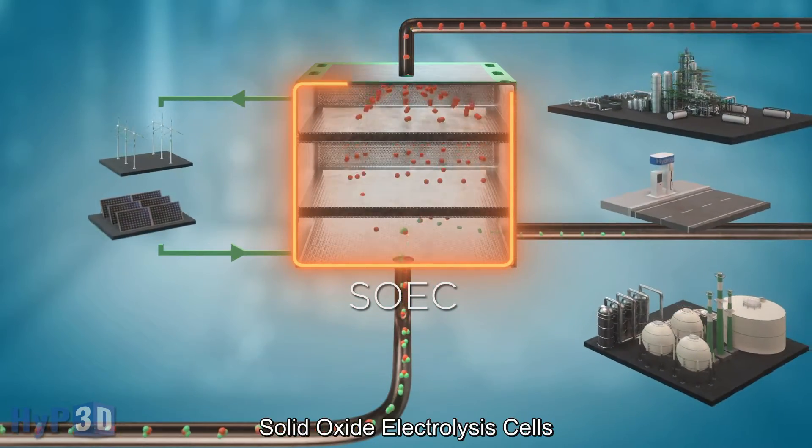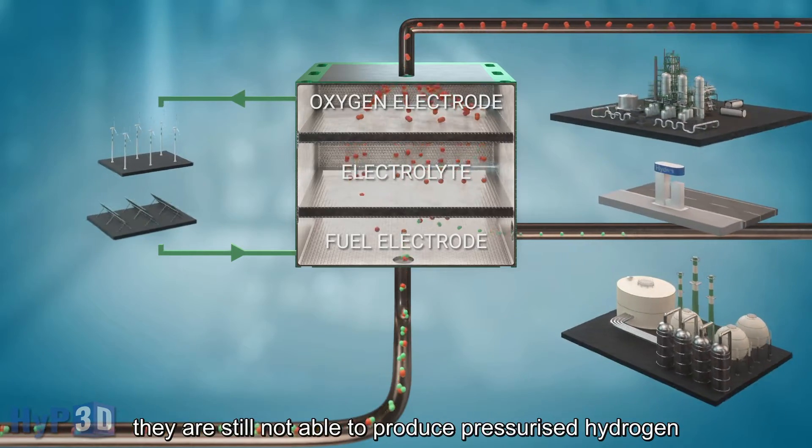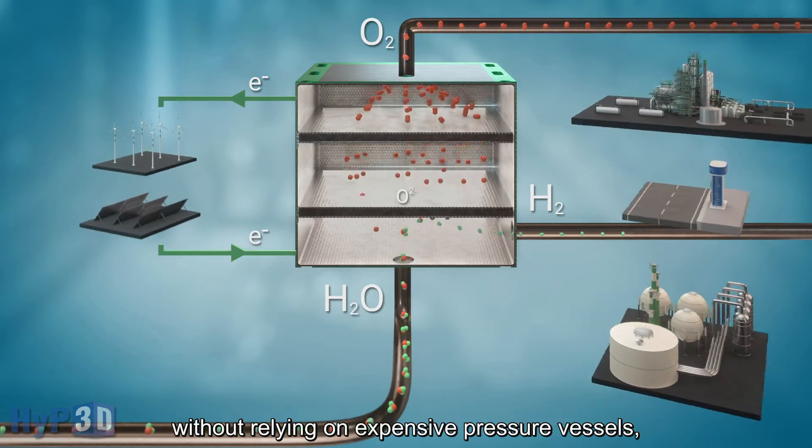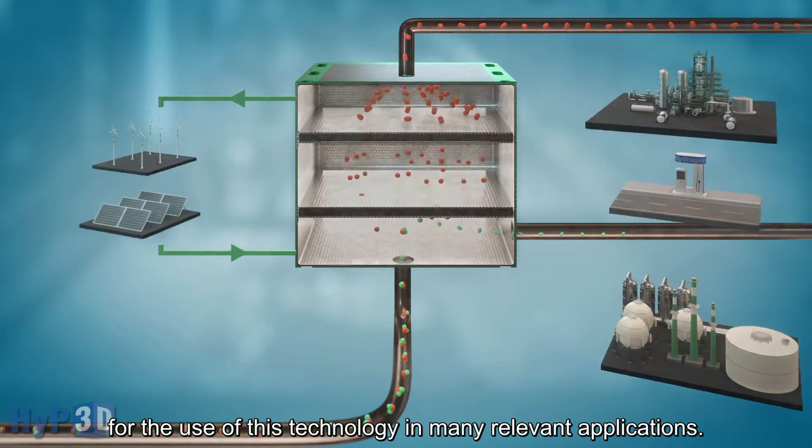Solid oxide electrolysis cells are the most efficient electrolyzers. However, they are still not able to produce pressurized hydrogen without relying on expensive pressure vessels, which represents a major barrier for the use of this technology in many relevant applications.